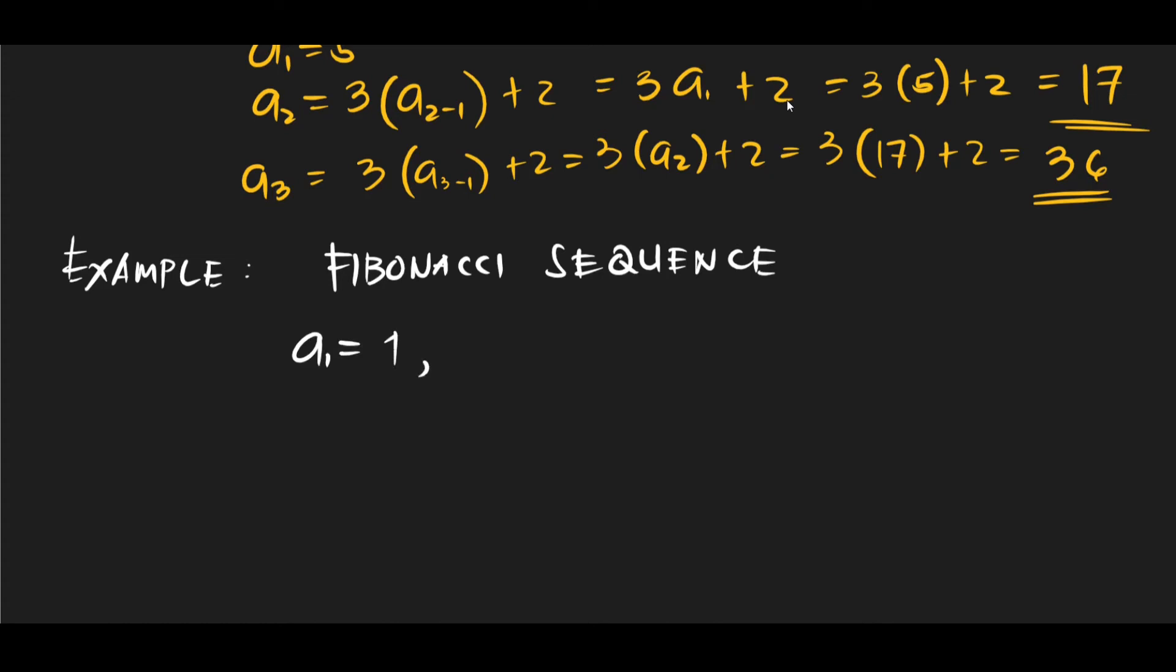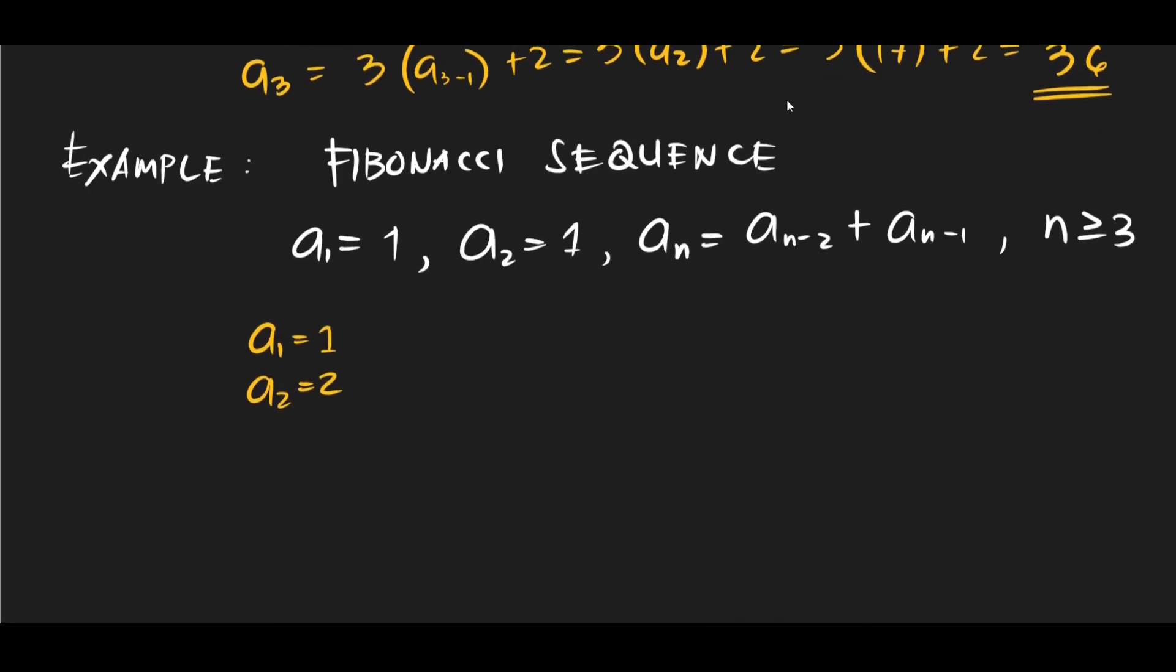a1 is equal to 1. Okay, and we have a2 is also equal to 1. And then an is equal to a(n-2) plus a(n-1), where n is greater than or equal to 3. Okay, so because we already have our 1 and 2 here. Okay, so let's try generating the different terms of this Fibonacci sequence. So let's say we already have our a1, which is equal to 1, right? Then a2 is equal to 1. Now let's start with our a3.